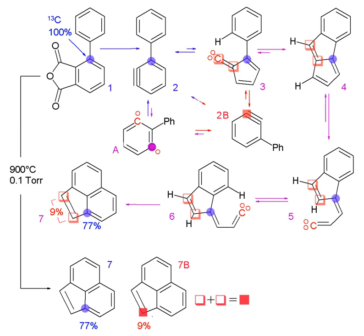The figure demonstrates the use of stable isotope labeling to discover the carbon atom rearrangement through reactions using position-specific labeled compounds.